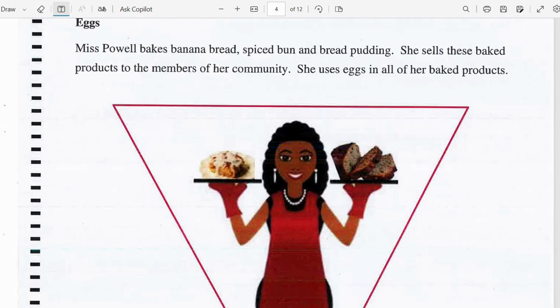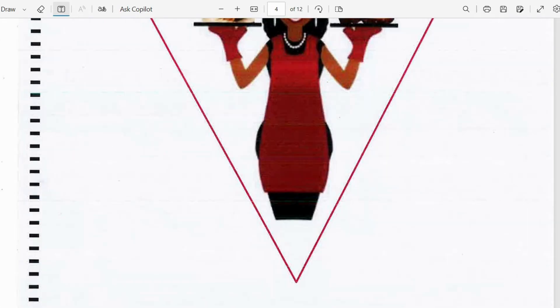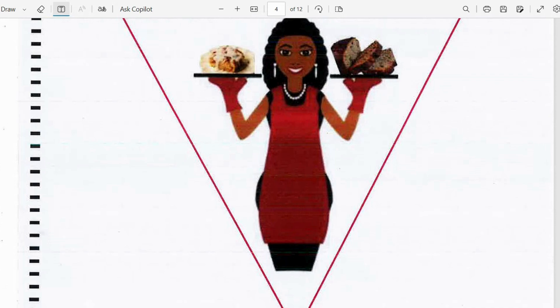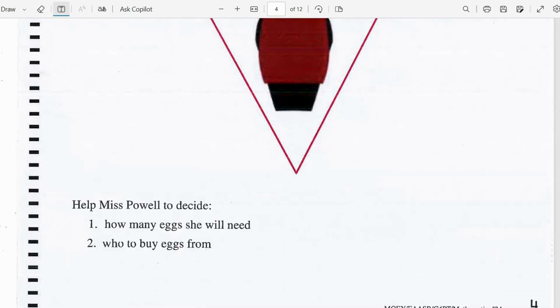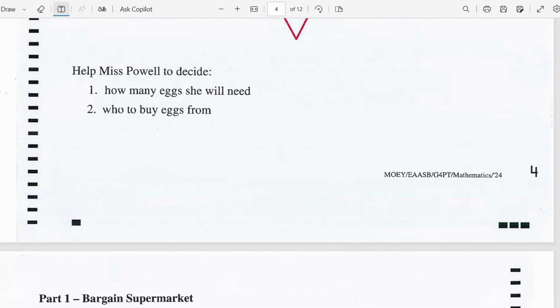She sells these baked products to the members of her community. She uses eggs in all of her baked products. And there's Miss Powell. Help Miss Powell to decide how many eggs she will need and who to buy eggs from.